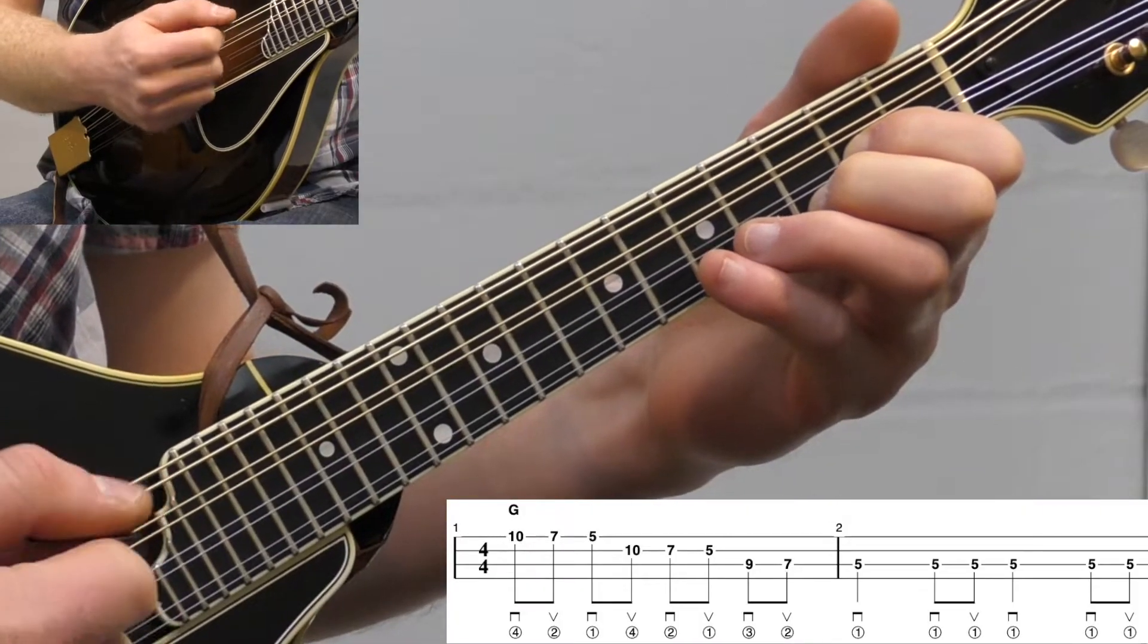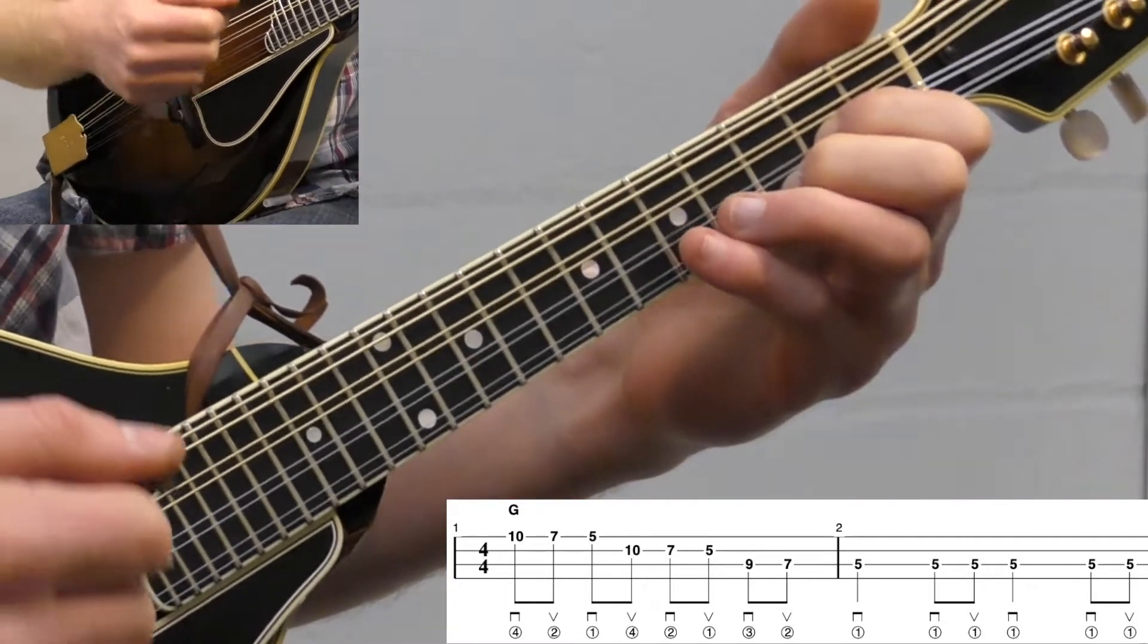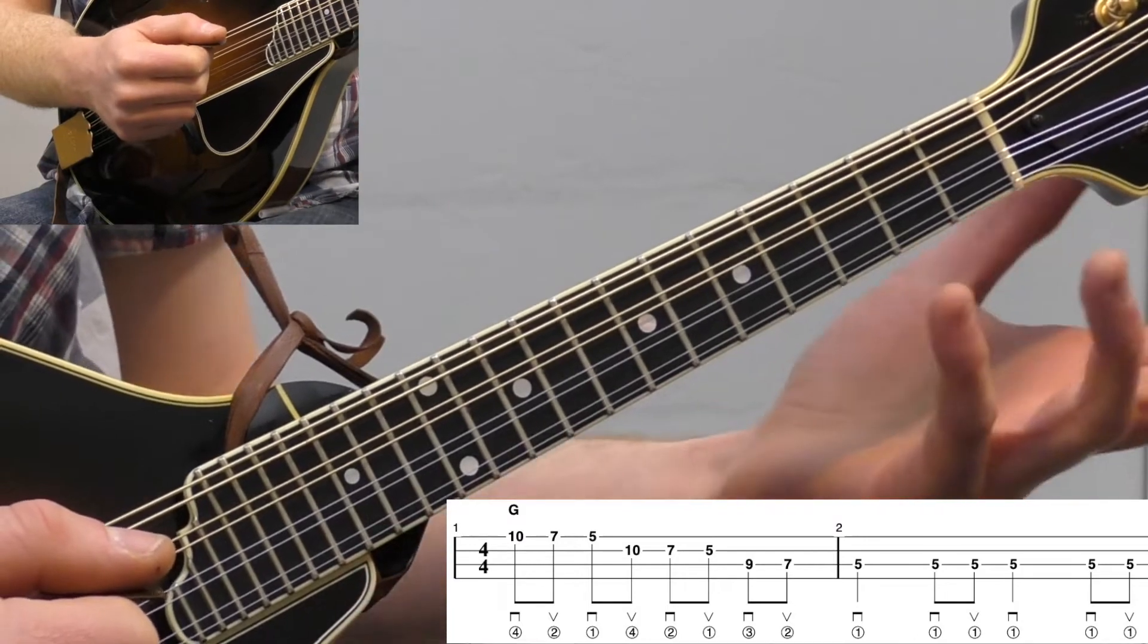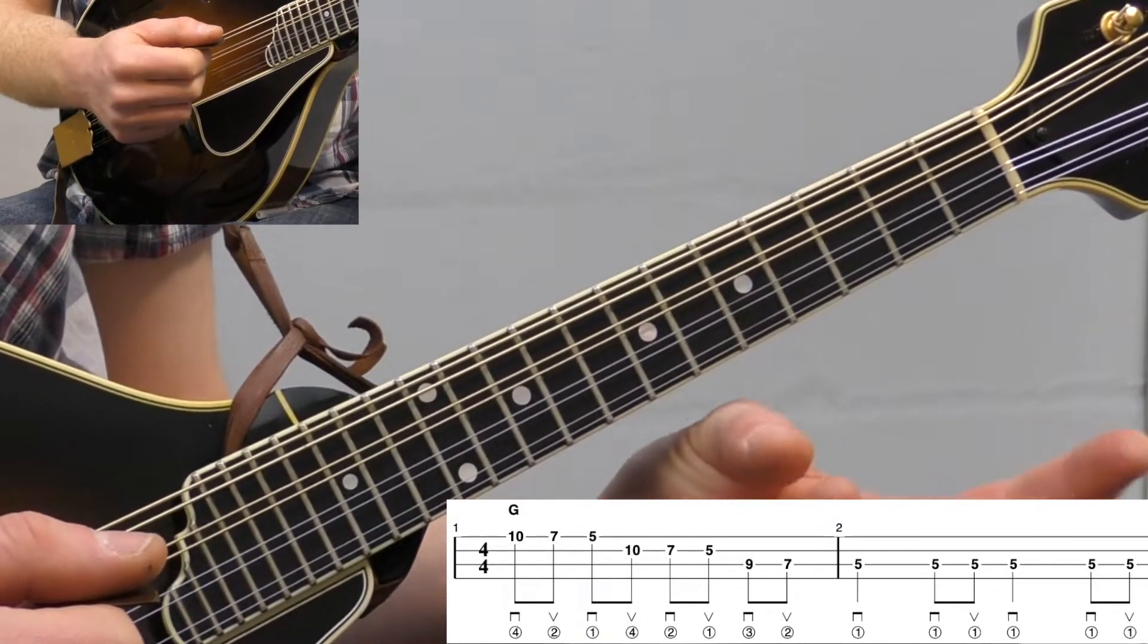All right, so this is going to be a closed position lick. What closed position means is that we're not going to be using any open strings. So the benefit to that is once we get the lick down, we can move it wherever we want to play it in a different key, which is really cool.